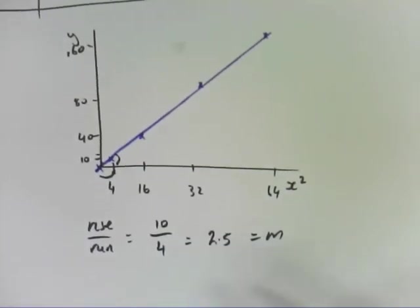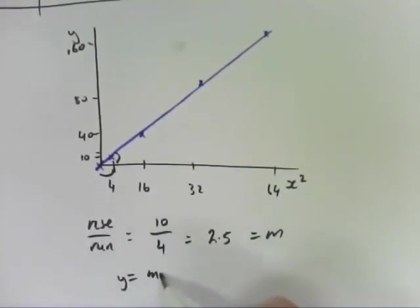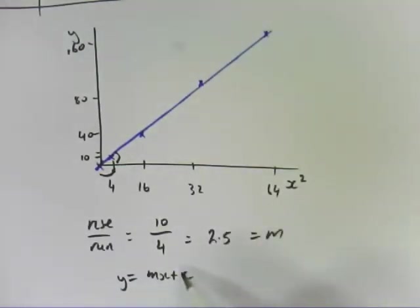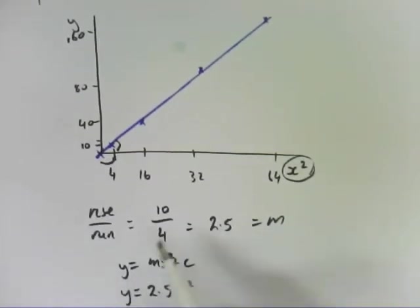So our equation, remember, y equals mx plus c. Because it's a straight line, we can do this. However, this is actually x squared for this one. So y equals 2.5x squared. And remember, c was 0. So that is the equation for this particular relationship we were looking at.